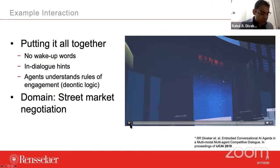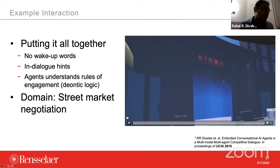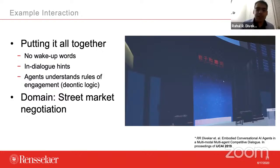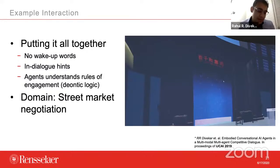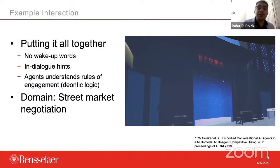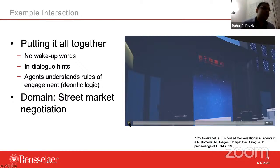One important cultural difference between the United States and China — or for that matter, even the United States and India — is about bargaining in street markets. You go to buy vegetables and you say, 'No, that is too expensive, give it to me cheaper.' That's not something common in the United States. We want to teach students that this happens and they should be prepared for it. AI agents might be able to simulate that. So we'll see a video.